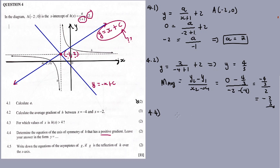Now let us find the equation with a positive gradient. It's y equals x plus c. We will calculate c. The y coordinate is 2, substitute the x coordinate of minus one: 2 equals minus 1 plus c. Transpose: c equals 3. Therefore the equation of the axis of symmetry with a positive gradient is y equal to x plus 3.